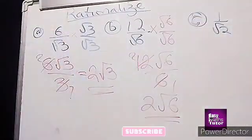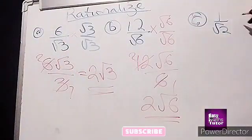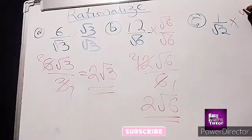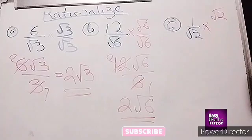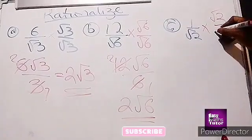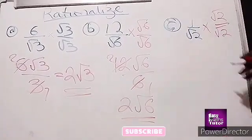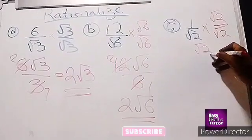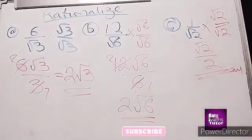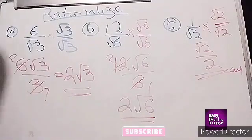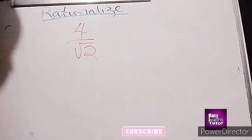Then to rationalize this final one, we will have root 2 all over root 2, giving us root 2 all over 2. So this is our final answer.